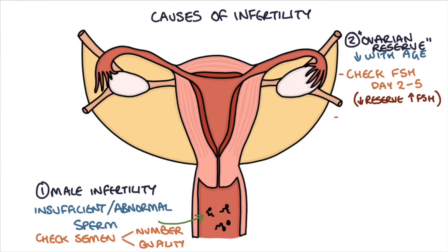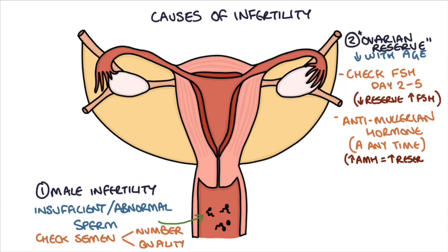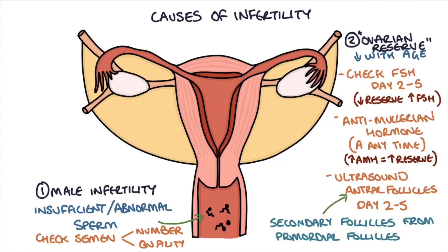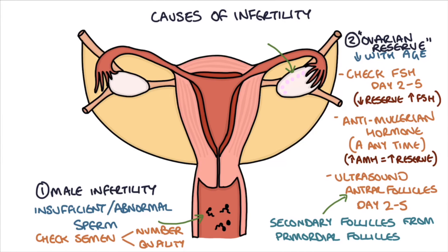Another way to assess ovarian reserve is to measure anti-Müllerian hormone (AMH), which can be tested at any time of the cycle — a higher level indicates a better ovarian reserve. We can also use ultrasound to count the antral follicles between day 2 and 5 of the cycle. Antral follicles are secondary follicles that develop when primordial follicles become activated. More antral follicles means a greater ovarian reserve and a better response to FSH, however a very high number could suggest polycystic ovarian syndrome.